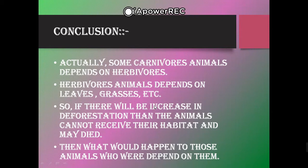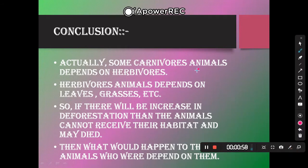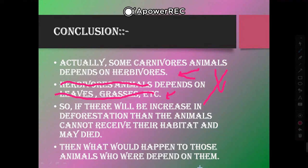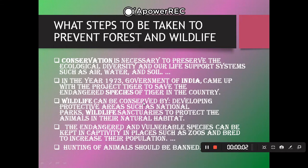If there is increased deforestation, animals lose their habitat and may die. Carnivorous animals depend on herbivorous animals, and herbivorous animals depend on leaves and grasses. If there are no leaves or grasses, herbivorous animals may die. If they die, then carnivorous animals are also affected and the food chain will be broken.